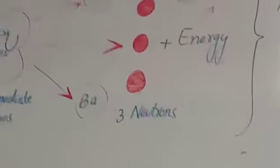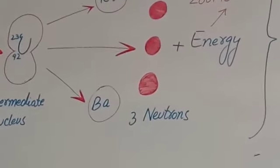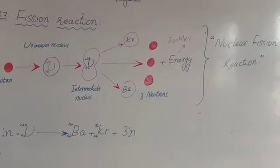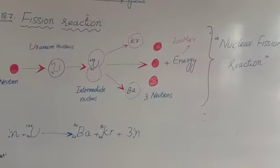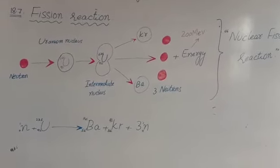These are the three neutrons produced per fission event. On average, 2.47 neutrons are released per event, as represented by the expression.